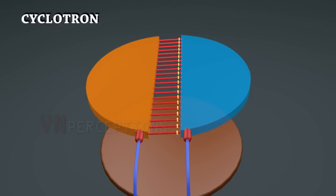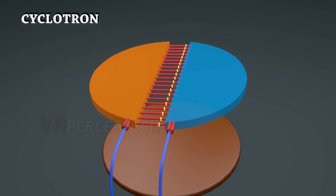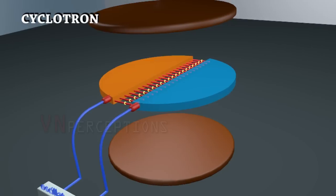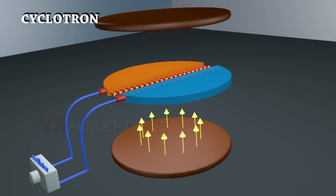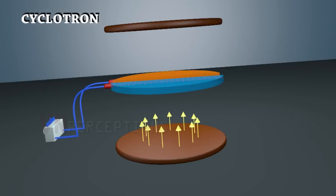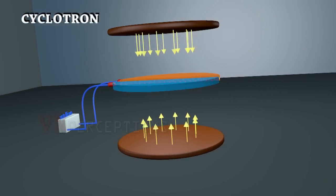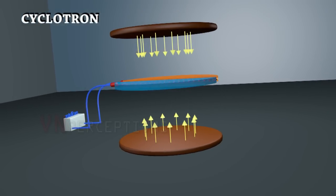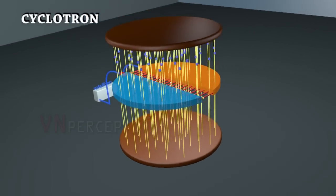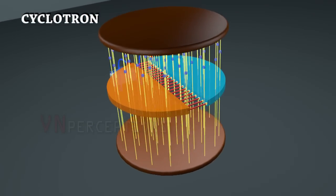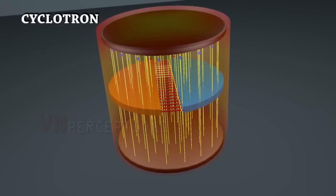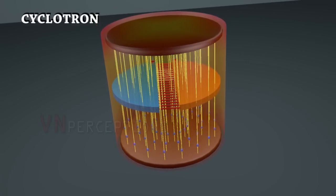One electromagnet is kept below the two D's and one electromagnet is kept above the D's. Bottom electromagnet will have north pole above and top electromagnet will have south pole below. This would create a magnetic field perpendicular to the direction of the electric field. This entire arrangement is sealed in a vacuum box.